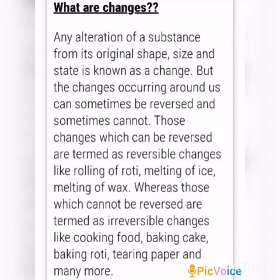This is what we have studied in our 6th Standard — the topic name is Changes Around Us. In that lesson, we learned about two types of changes: reversible change and irreversible change. Those changes which can be reversed are termed as reversible changes, like rolling of roti, melting of ice, and melting of wax. Those which cannot be reversed are termed as irreversible changes. The examples of irreversible changes are cooking food, baking cake, baking roti, tearing paper, and many more.